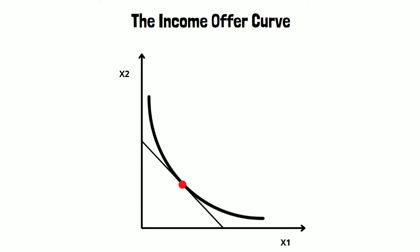On your screen you can see a graph in which there is an optimal consumption bundle for a specific income level. We can draw two more optimal consumption bundles for higher levels of income in the same graph.